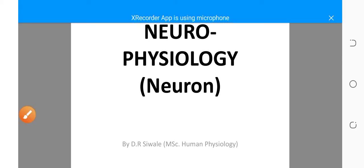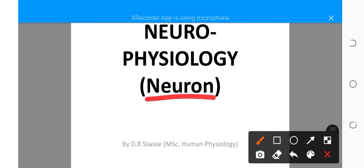Hello everyone, welcome to neurophysiology. These are a series of lectures I'm going to give. We'll talk about various parts of the spinal cord, various parts of the brain and their functions. But before we look at those things, it's important to understand the basic structural unit of the nervous system, which is the neuron. Today I'm going to talk about the neuron, its classification — types based on number of poles, functions, length of axons — and then we'll appreciate the structure of the neuron.